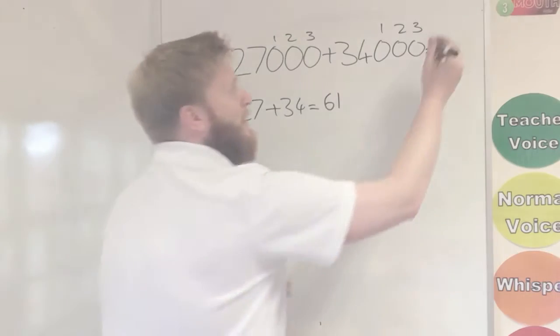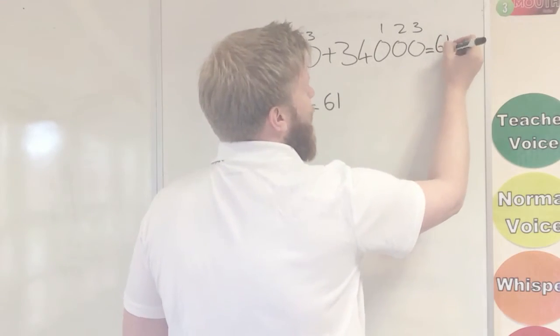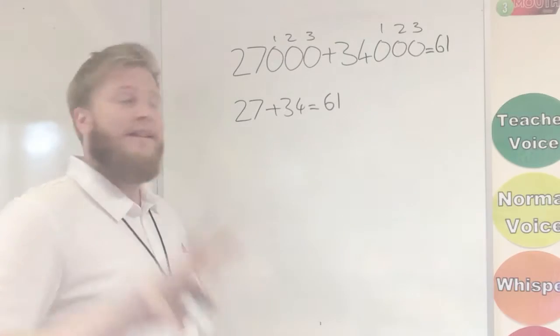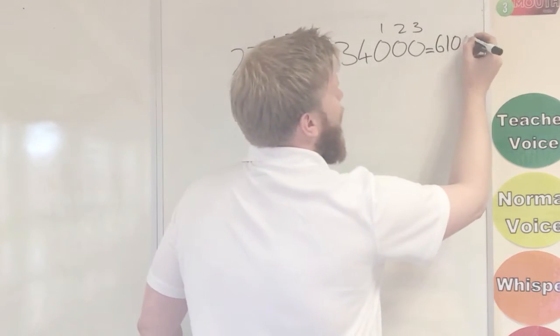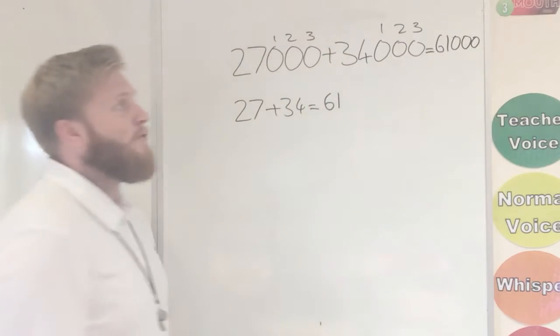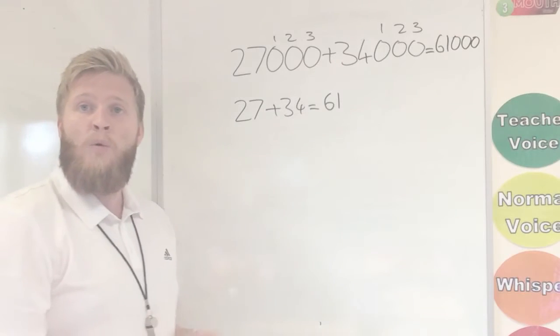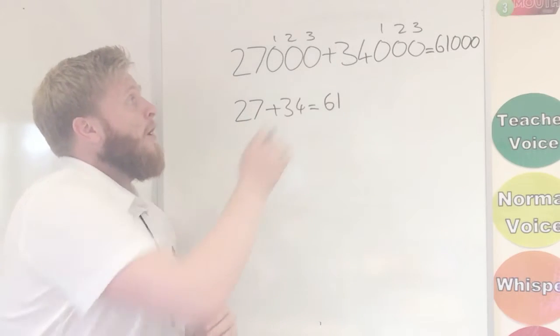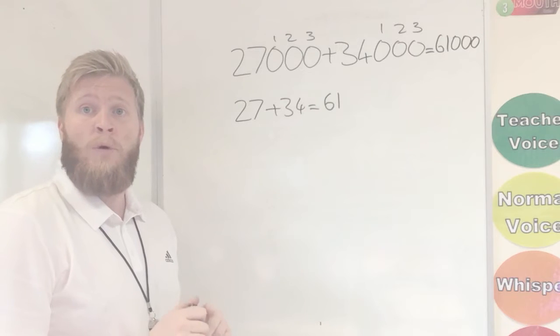What I'm going to do is put my 61 here, but now I need to add my three zeros on that I've taken off. So now I've got that answer there without having to do 10,000 addition.